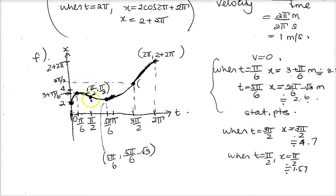When acceleration equals zero, you have an inflection. When acceleration is negative, it's concave down. When acceleration is positive, it's concave up. There's another inflection, then concave down.